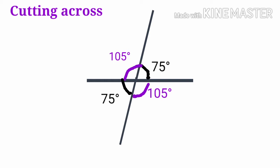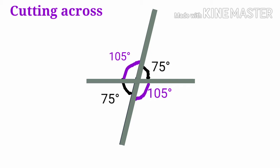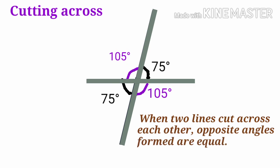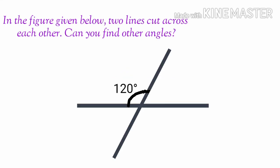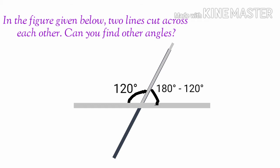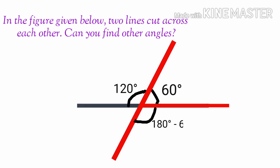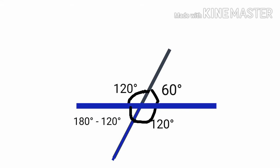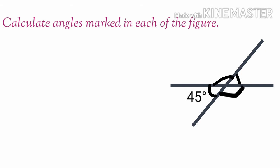We have a linear pair of these angles. This is a line drawn to another line, therefore this forms a linear pair. This angle is equal to 180 minus 120 degrees, that is equal to 60 degrees. This forms another linear pair, and this angle is equal to 180 minus 60 degrees, that is equal to 120 degrees.